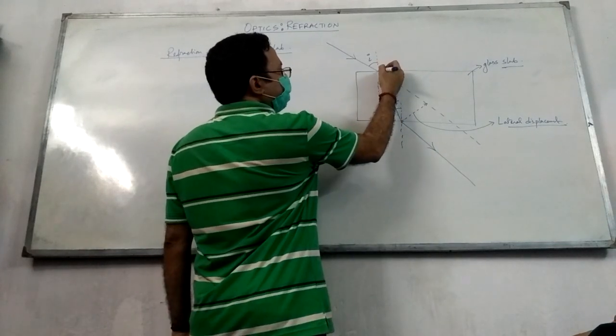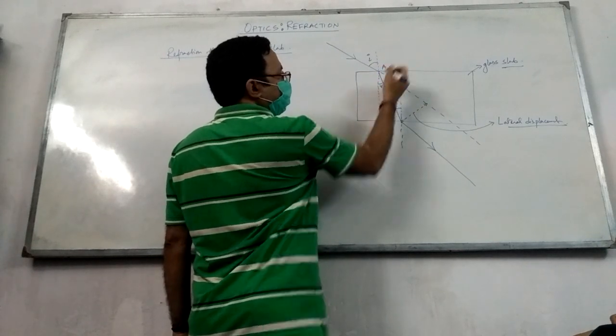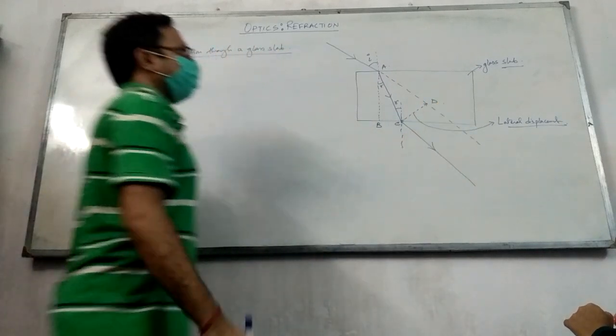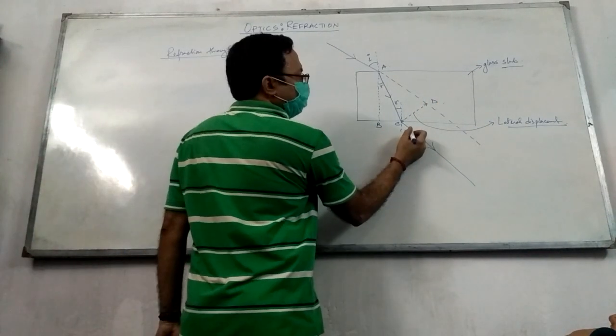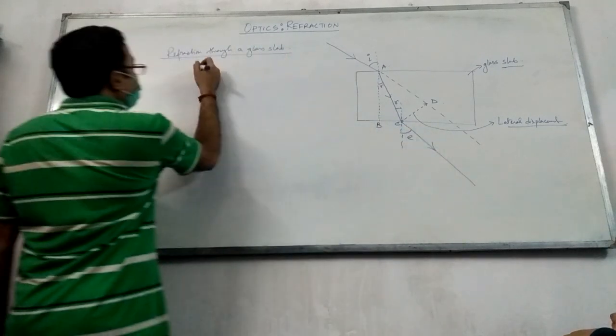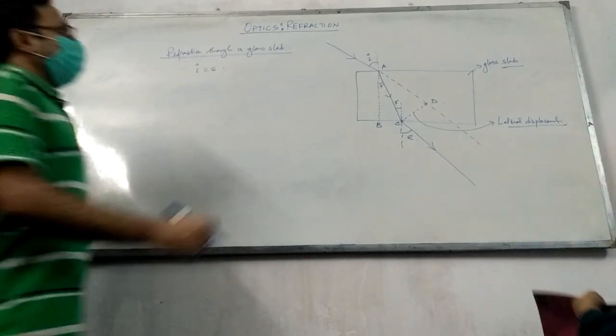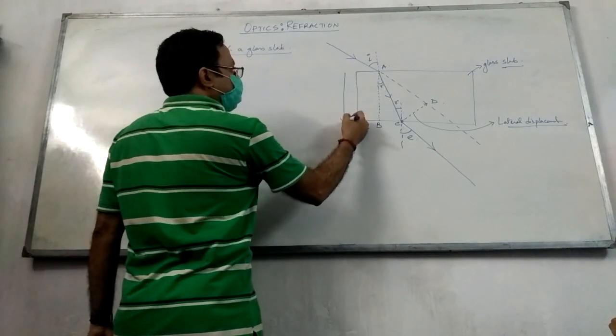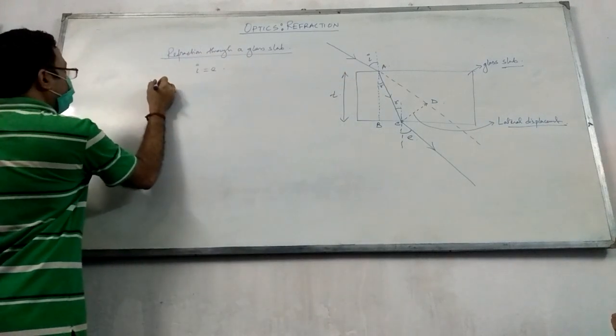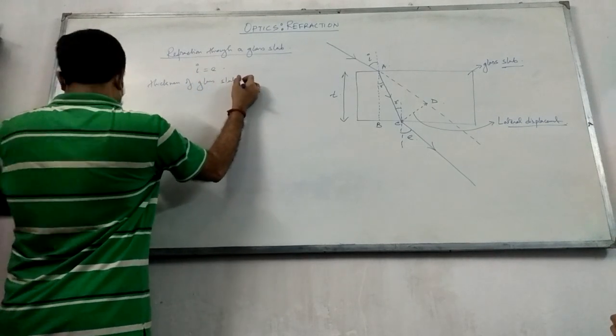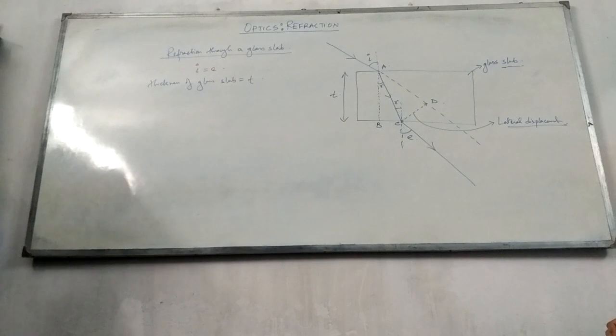So, this is point A, this is B, this is C, and this is the angle of emergence E. i or E is equal - angle of incidence or angle of emergence is equal. See, the thickness of the glass slab is T. Thickness of glass slab is equal to BC. T is the thickness of glass slab. Clear? Yes.